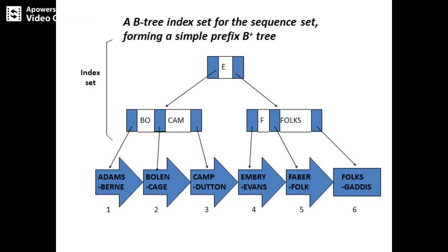Similarly, if the key is 'FOLKX', we start at the root. FOLKX is greater than E, so we come to the right branch. FOLKX is greater than F, so we move to the next key FOX. FOLKX is greater than FOX — wait, actually FOLKX is less than FOX — so it goes to the right branch of F and reaches the sixth block. This is how you access data from a B+ tree. You must wisely choose the center part as the root, and sometimes the root can have more than one index.